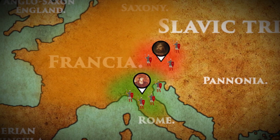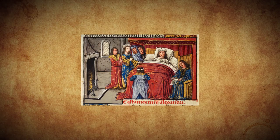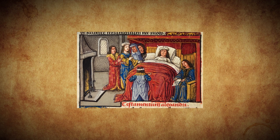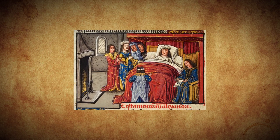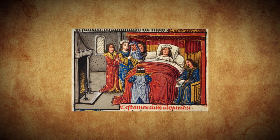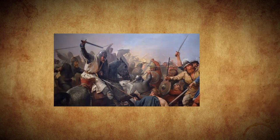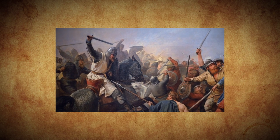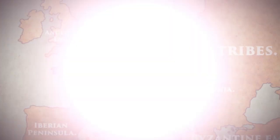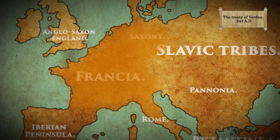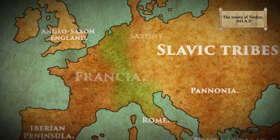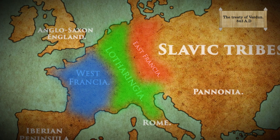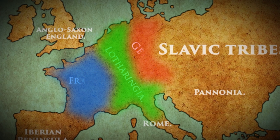As long as Louis was alive, the empire remained intact. However, in 840 the old Emperor finally died at the age of 62, and with each of his sons having established themselves as rulers of their own domains, a new civil war broke out that lasted for three years and was settled by the Treaty of Verdun in 843, officially ending the Carolingian Empire as it was divided into Lotharingia, West Francia and East Francia, the two latter becoming the political foundations of France and Germany.